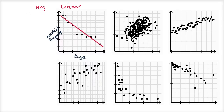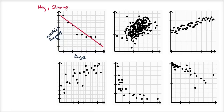This one looks pretty strong because the dots aren't that far from the line. This one gets a little bit further, but there are no dots way out there — most of them are pretty close to the line. So I'll call this a negative, reasonably strong linear relationship between these two variables.